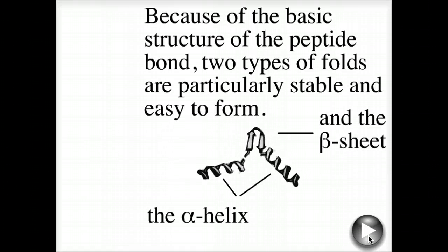Because of the basic structure of the polypeptide bond, two types of folds are particularly stable and easy to form: the alpha helix and the beta sheet.